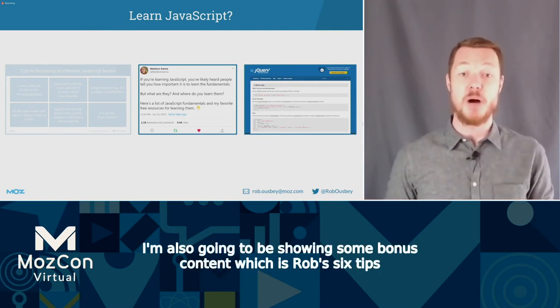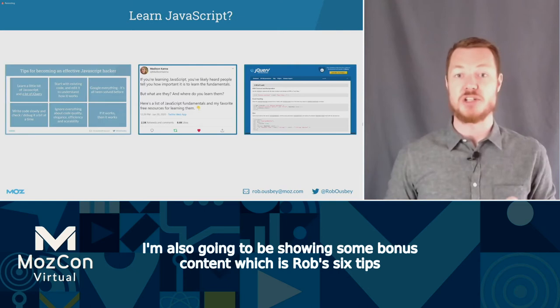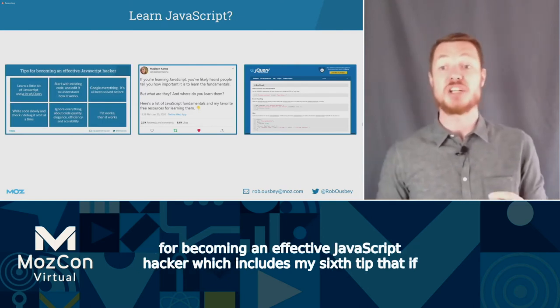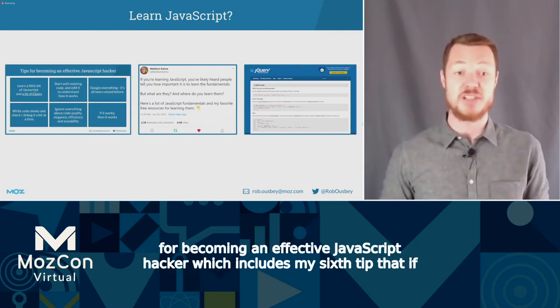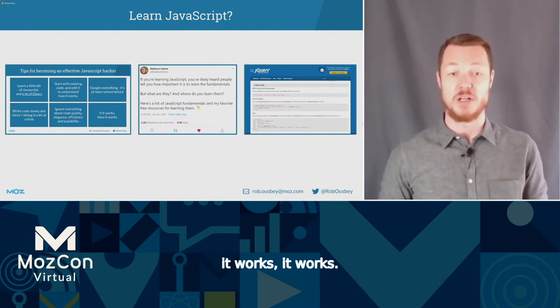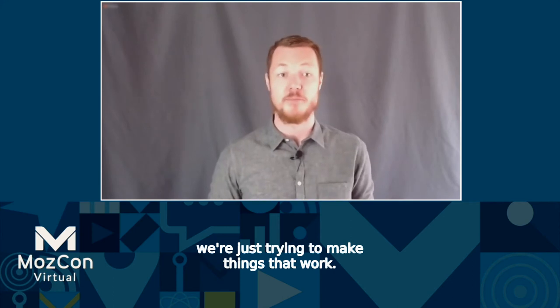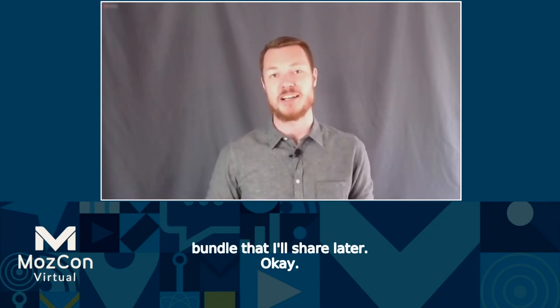I'm also going to share some bonus content: Rob's six tips for becoming an effective JavaScript hacker, which includes my sixth tip that if it works, it works. We're writing code to help you get your job done as efficiently as possible. It doesn't need to look beautiful or be perfectly optimized — we're just trying to make things that work. Links to all of these are available on my Twitter feed or in the link bundle I'll share later.